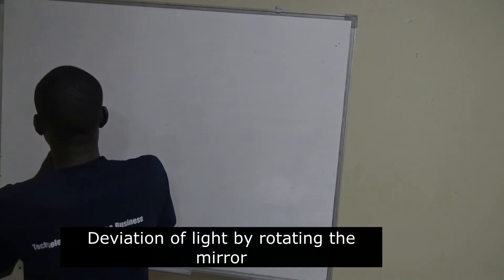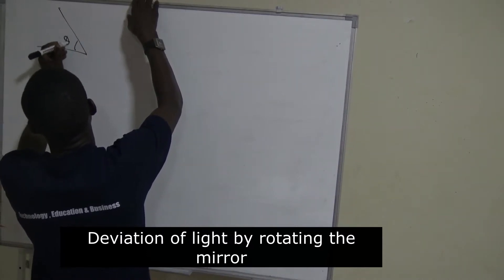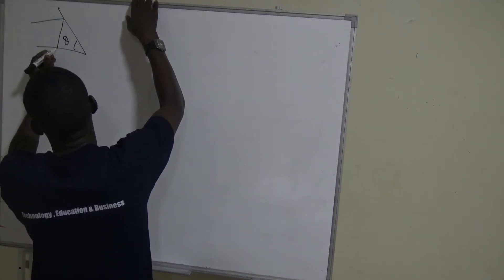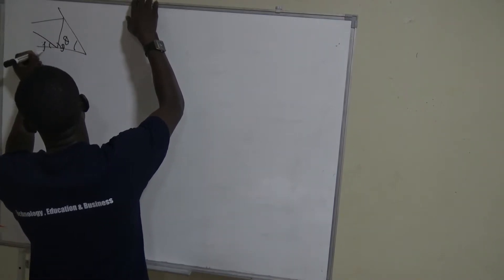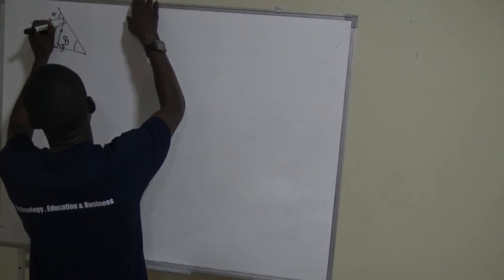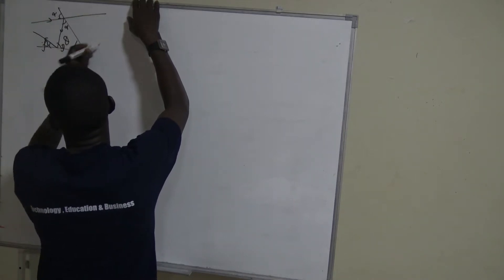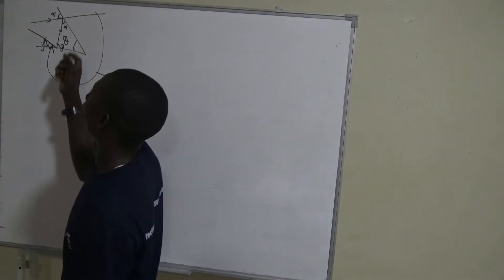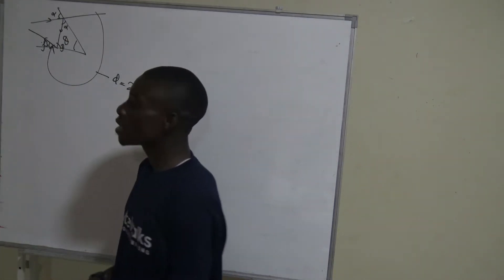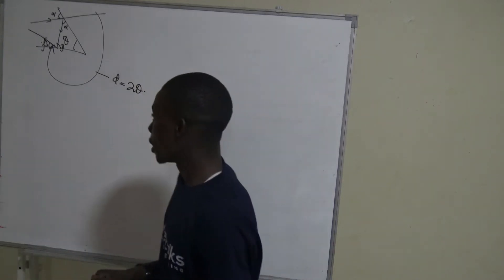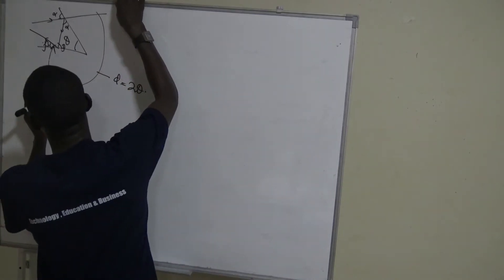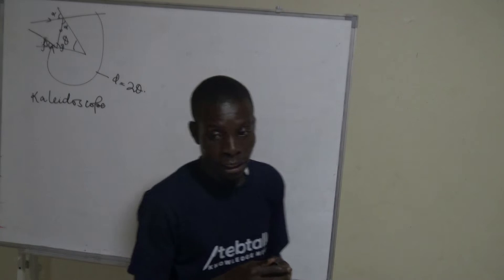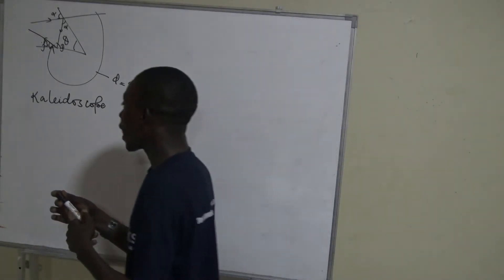As a review, we had looked at when two mirrors are inclined at an angle theta. We have rays incident on the first mirror, reflected on the second one, with angles alpha and beta. The total deviation is twice the angle of inclination of the mirror. In such a case, the mirror forms multiple images, and that arrangement is what we call the kaleidoscope.